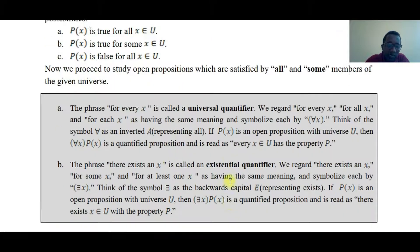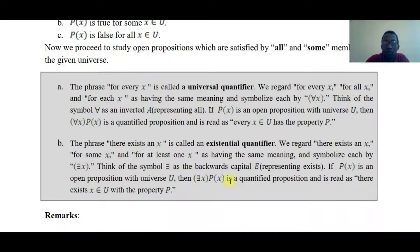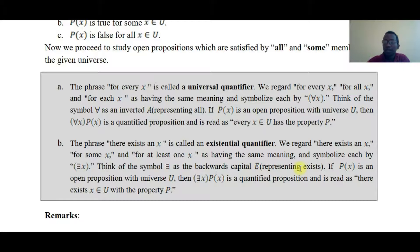The other quantifier is the existential quantifier. 'There exists x,' 'for some x,' or 'for at least one x' is called the existential quantifier. The symbol is a backward capital E, representing existence. If p(x) is an open proposition with universe U, then the existential quantification is a quantified proposition, and it is read as 'there exists x element of U with the property p.'